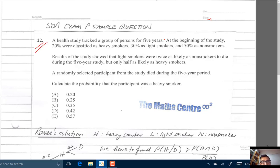Let's read the question. A health study tracked a group of persons for five years. At the beginning of the study, 20% were classified as heavy smokers, 30% as light smokers, and 50% as non-smokers.